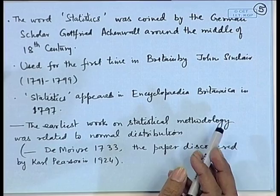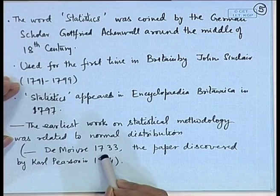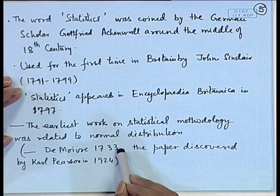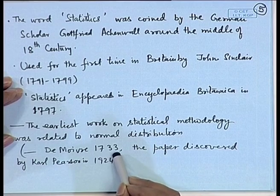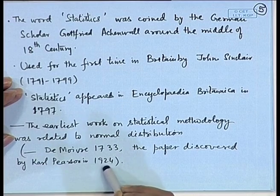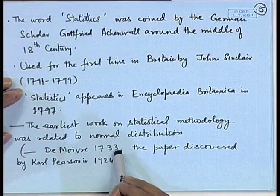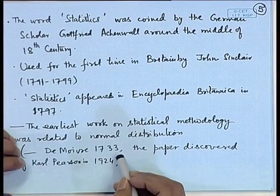The modern statistical methodology's earliest references are to the normal distribution, most probably by De Moivre. In 1733, he wrote a paper which appeared in an obscure journal and therefore was not known. It was later discovered in 1924 by British statistician Karl Pearson. In this paper, De Moivre probably gave for the first time what is known as the normal distribution, arising in a large number of Bernoullian trials — obtained as a limit of certain sums of random variables. It is known as one of the first central limit theorems.